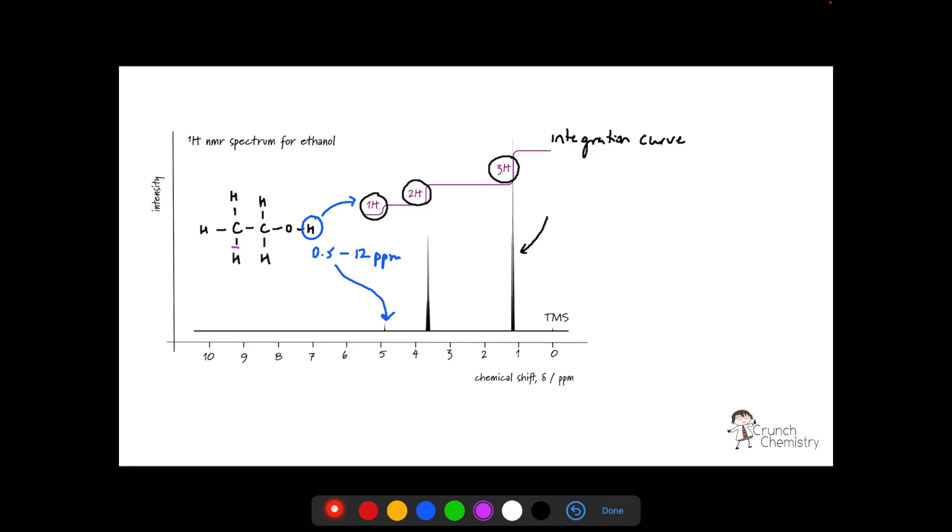If we take this proton here and this one and this one, these three protons are in the same chemical environment. They're all part of the same methyl group. So they are going to be the most shielded in terms of their experience of the external magnetic field. And on the data sheet, we would expect a signal in the range of 0.5 to 2 parts per million. So we can link those protons to this signal here.